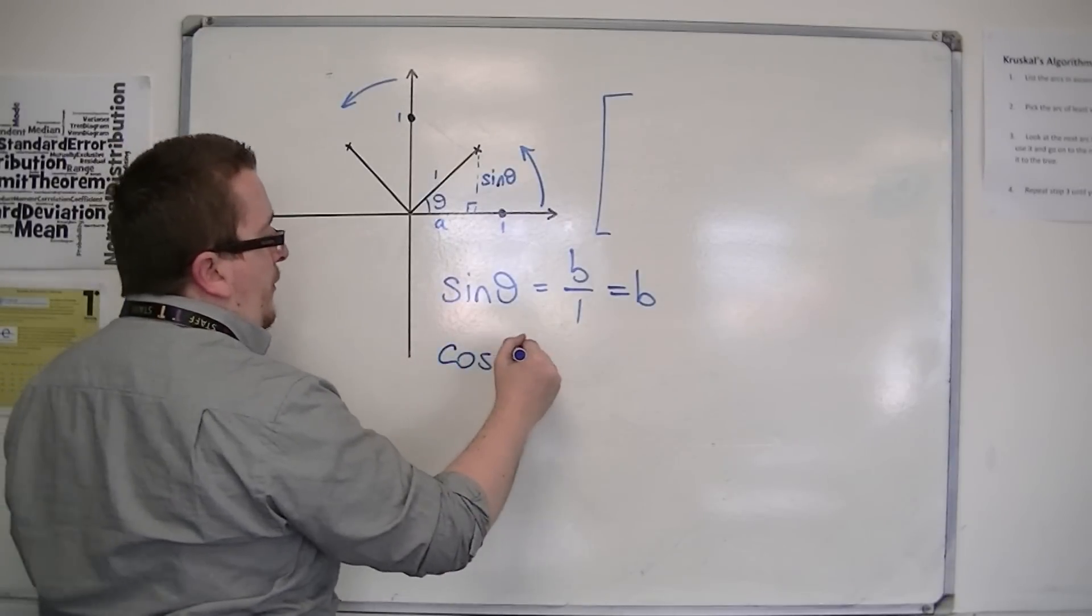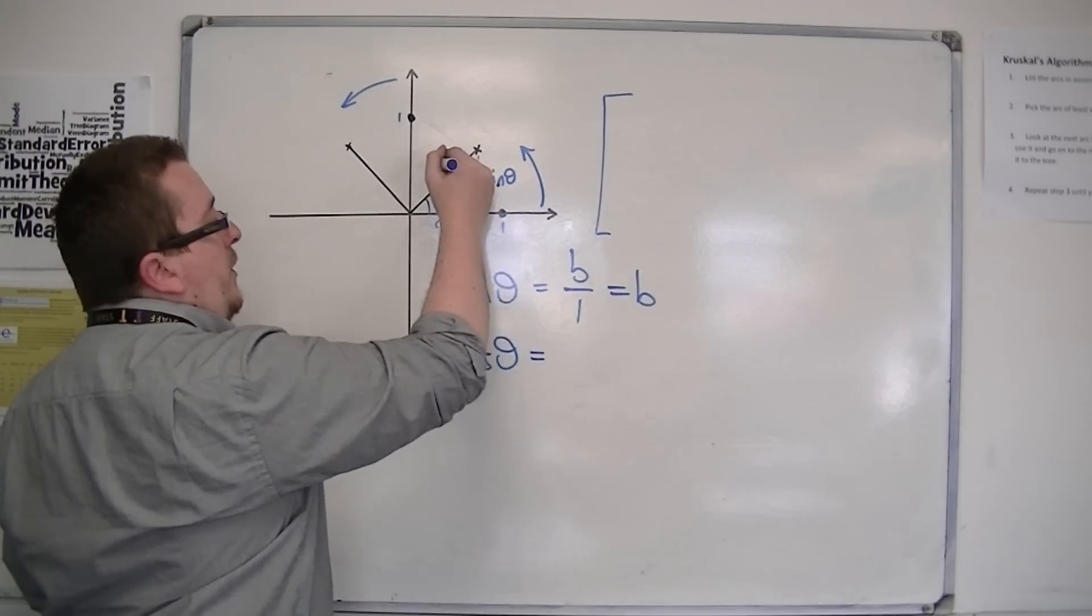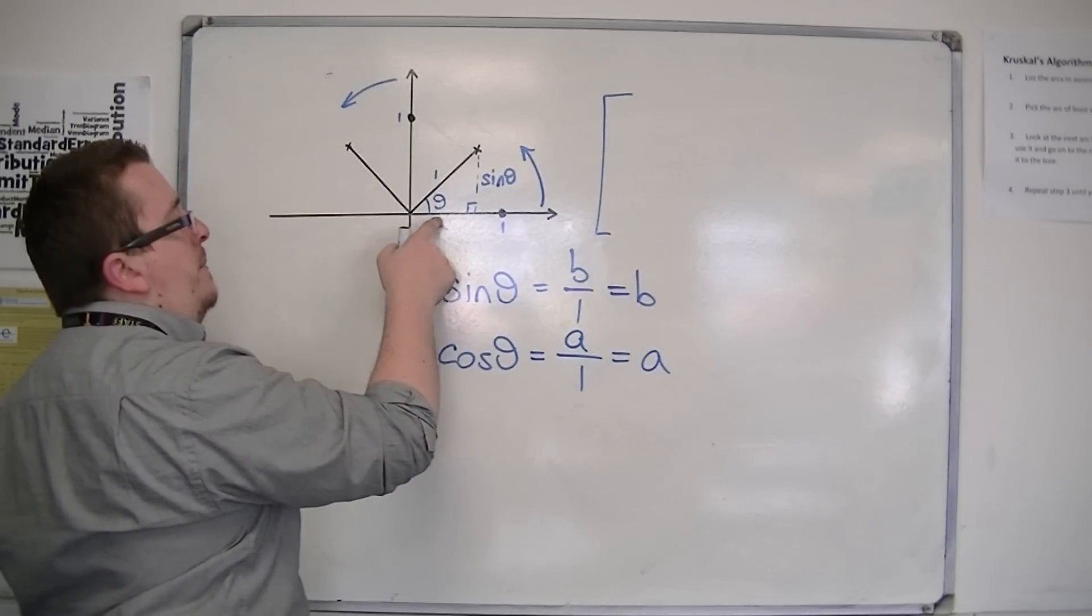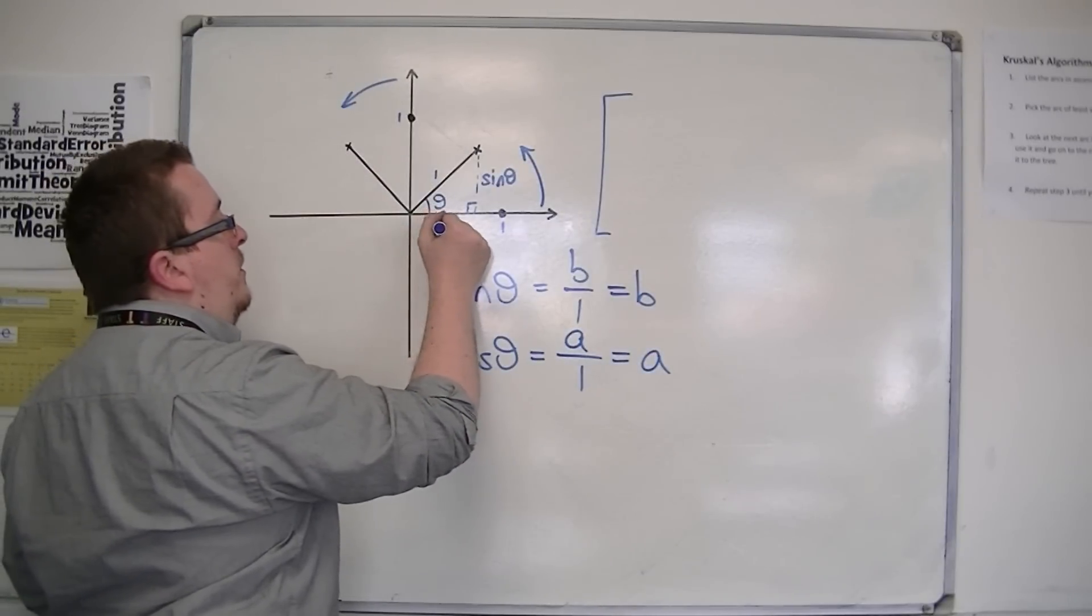Now if I use cosine, which is the adjacent over the hypotenuse, a over 1, well, that's just a. So that means that the base of the triangle is cos theta.